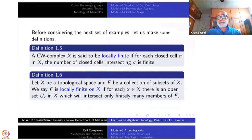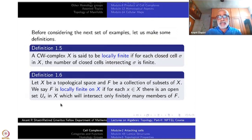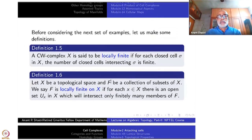Let X be a topological space and F be a collection of subsets of X. This is a more general definition from point-set topology. We say F is locally finite on X if for each point x in X, there is an open set U_x containing x which intersects only finitely many members of F. For each x, there is a neighborhood U_x of x which intersects only a finite number of members of F.